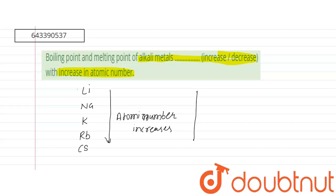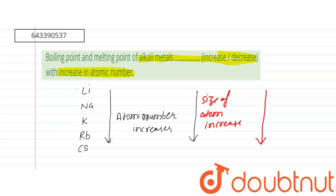As atomic number increases, the size of the atom increases, but the metallic bond strength decreases.